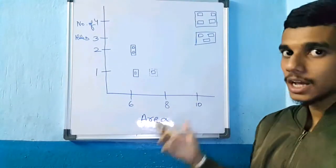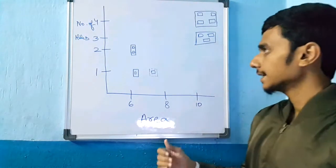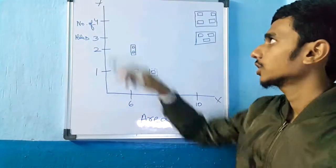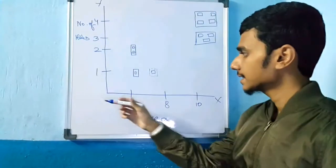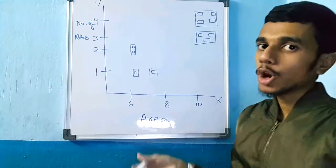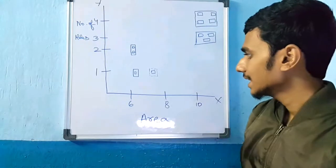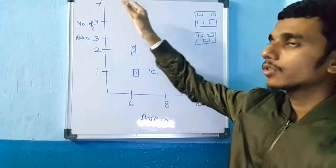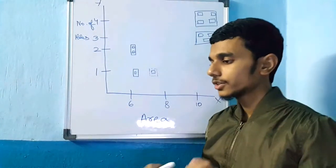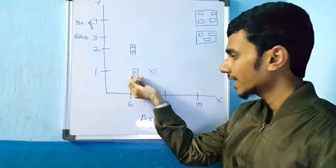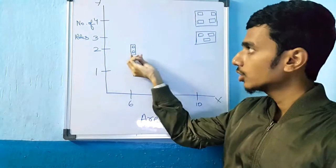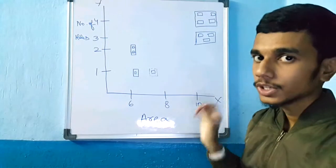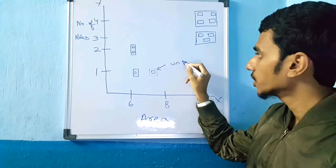Now I'll give you another example of how the describe and match method works. I have drawn a graph with a y-axis and an x-axis. The x-axis contains area and the y-axis contains number of holes. You can see that as the area increases the size also increases, and as the area increases the number of holes also increases. For example: area 6 has 1 hole, area 6 has 2 holes, area 10 has 3 holes, area 10 has 4 holes.